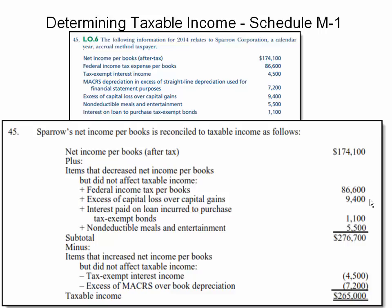Then we need to also add in the excess of capital loss over the capital gains, add the interest paid on the loan incurred to purchase tax exempt bonds, and add in non-deductible meals and entertainment. That will give us a subtotal amount, and then we need to subtract out items that increase net income per books but didn't affect taxable income.